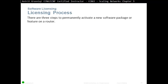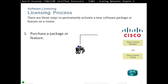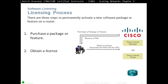Licensing Process. There are three steps to permanently activate a new software package or feature on the router. The first step is to purchase a package or feature from the Cisco website. You choose the license — for example, a security license — and then Cisco will send you a Product Activation Key, or PAK key. You then use the PAK key plus your UDI, the Unique Device Identifier, and send it back to Cisco to obtain the license. Each license is bound to a unique device, so two devices cannot share one license.